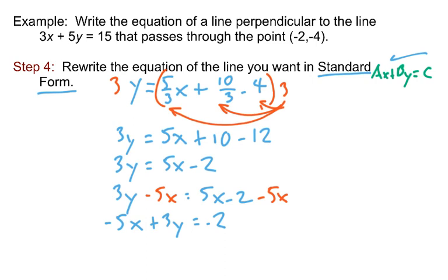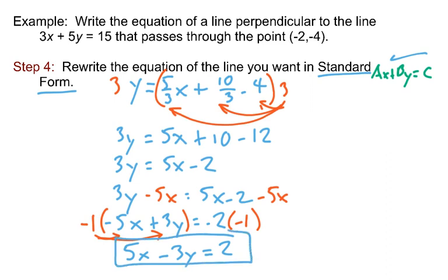And you might think, okay, I'm done, I've got it in Ax plus By equals C form. But remember, there's also a restriction that says that the A is not supposed to be negative, and that's what happened here. That's just sort of bad form, bad etiquette, you know, kind of like using the wrong fork at dinner. So that's not supposed to be negative. Easy to fix that: multiply both sides by negative 1, and you'll just reverse all the signs. And so distributing that across, you will end up with a positive 5x minus 3y equals 2. And that is the equation of the line perpendicular to 3x plus 5y equals 15 that passes through the point (-2, -4).